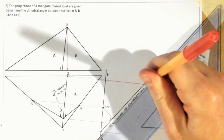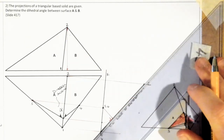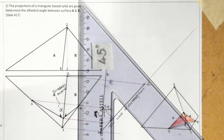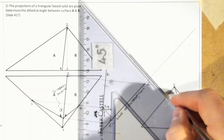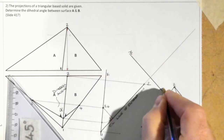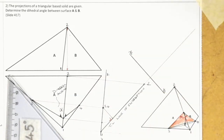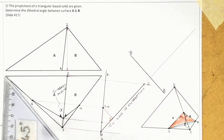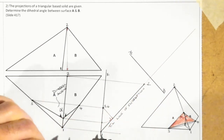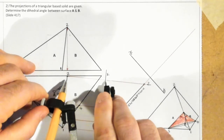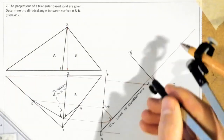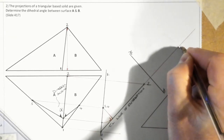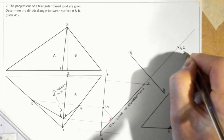If I project out parallel to the true length of the line of intersection 1-2, and set up an x2, y2 — which is another auxiliary view — that is known as x2, y2. From my x1, y1 back, because when we project out the x2, y2, we take our distances from the last XY line back. The distance from x1, y1 back to 1 is the same as the distance from x1, y1 back to 2. That way, we see it as a point view. There at this point is the line of intersection at 1, 2, but we see it as a point view — very important.